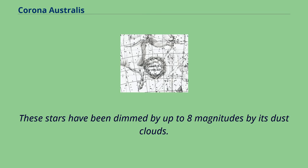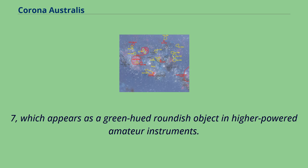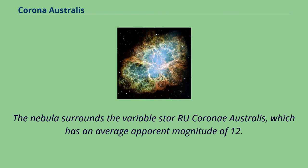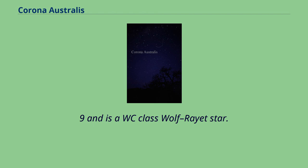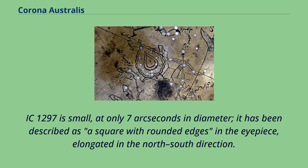IC 1297 is a planetary nebula of apparent magnitude 10.7, which appears as a green-hued roundish object in higher-powered amateur instruments. The nebula surrounds the variable star RU Corona Australis, which has an average apparent magnitude of 12.9 and is a WC-class Wolf-Rayet star. IC 1297 is small, at only 7 arcseconds in diameter. It has been described as a square with rounded edges in the eyepiece, elongated in the north-south direction, with colors described as blue, blue-tinged green, and green-tinged blue.